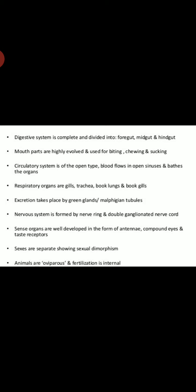These organs are present according to which type of habitat the organisms live in. Excretion takes place by green glands or malpighian tubules. Nervous system is formed by nerve rings and double ganglionated nerve cord. Sense organs are well developed in the form of antennae, compound eyes and tactile receptors.